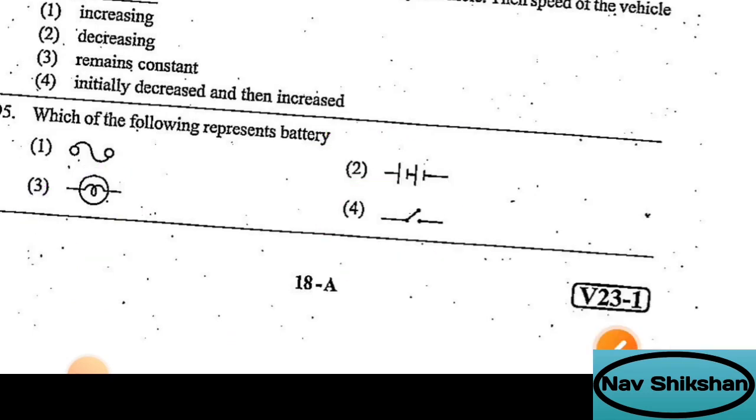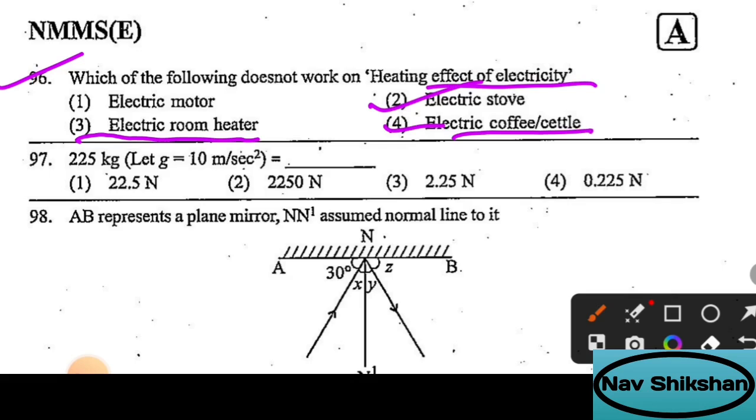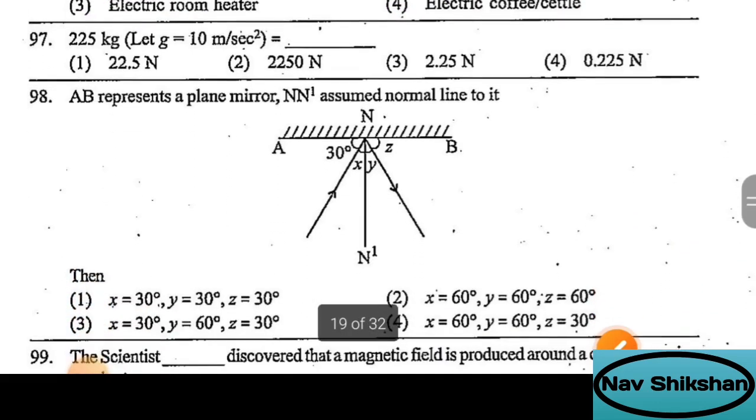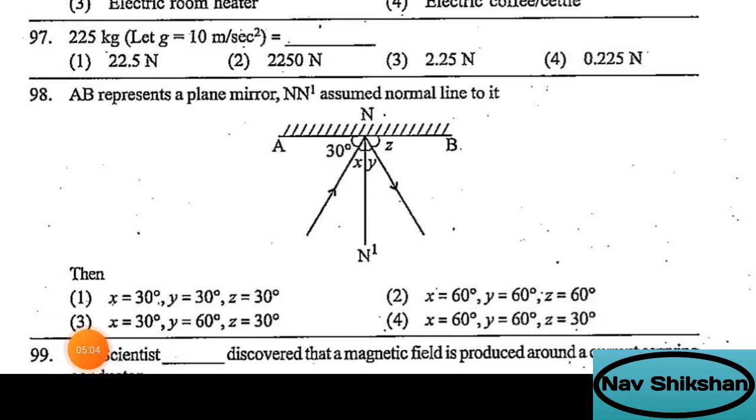Question 96: which of the following does not work on heating effect of electricity? Electric room heater works on heating effect, electrical stove works on heating effect, electric coffee kettle works on heating effect, but electric motor does not work on this principle. So option 1 is correct here.